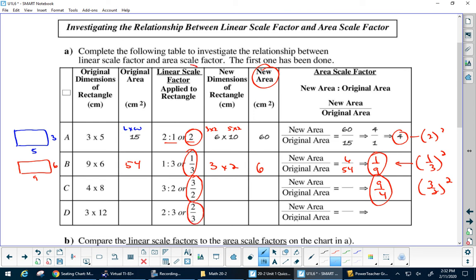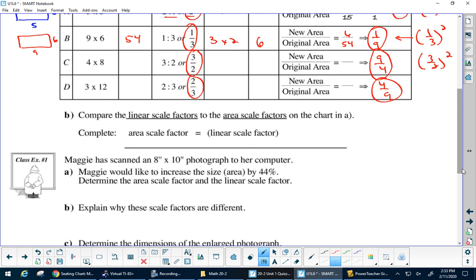2 thirds. Now that's the linear scale factor. What would be the area scale factor? 4 over 9. So here, this sentence is very, very important. The area scale factor equals the linear scale factor squared. Because you multiply each side by something, it actually, now you multiply those together, it squares it.